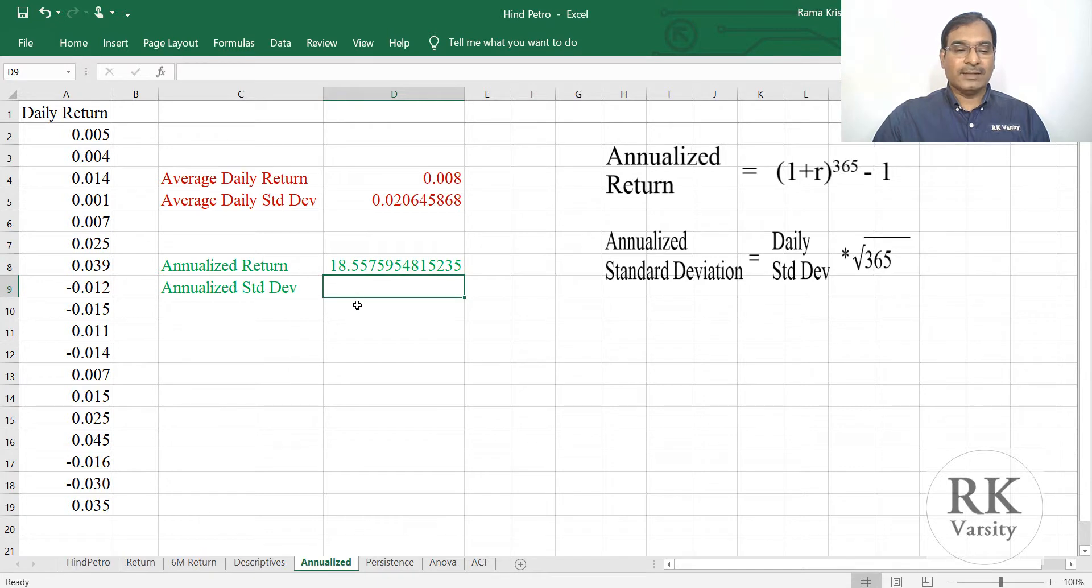Now to get your annualized standard deviation, this equals to daily standard deviation times square root. In Excel we have a square root function, SQRT, square root of 365. Then press enter key.